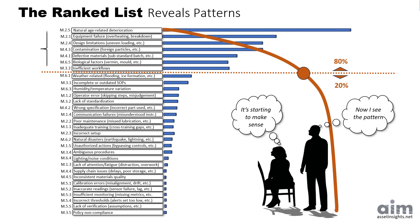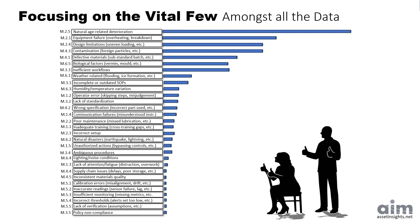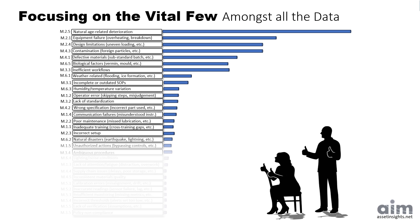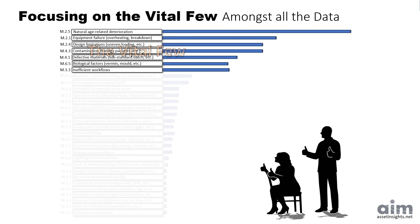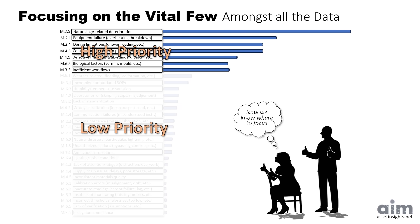Suddenly, the noise fades. The frustration shifts to awareness — the team can see the vital few and where to focus its attention. Instead of chasing dozens of small issues, the team can target the few causes that matter most, those that account for most of the risk and cost. This is where Pareto analysis changes the game: it helps the organization move from reaction to strategy, from frustration to confidence.